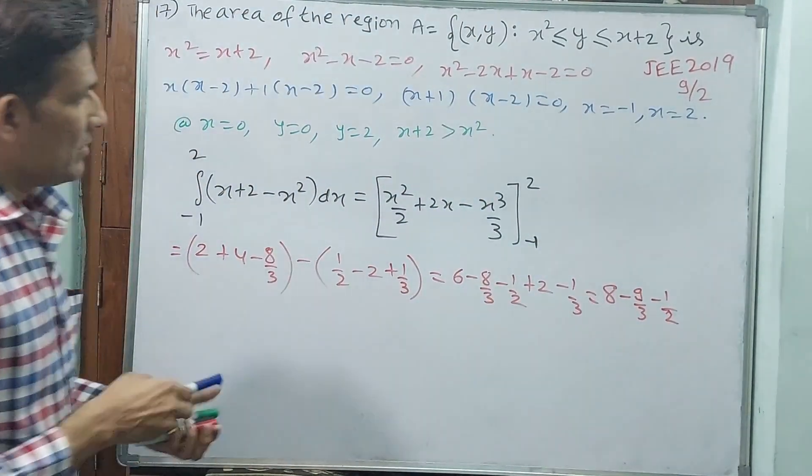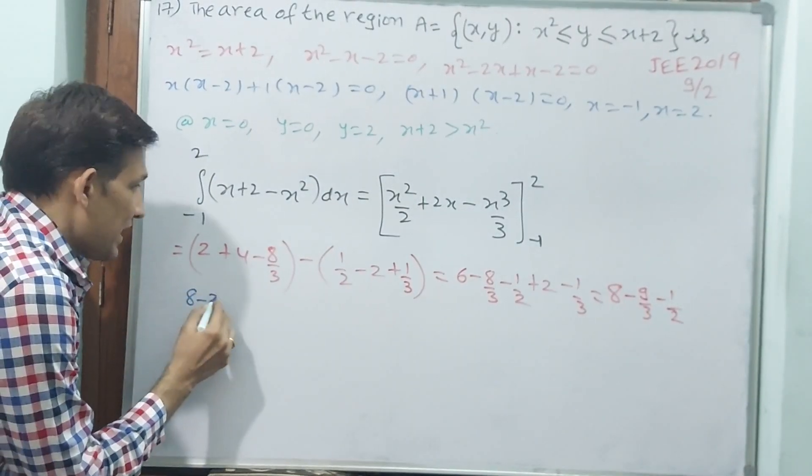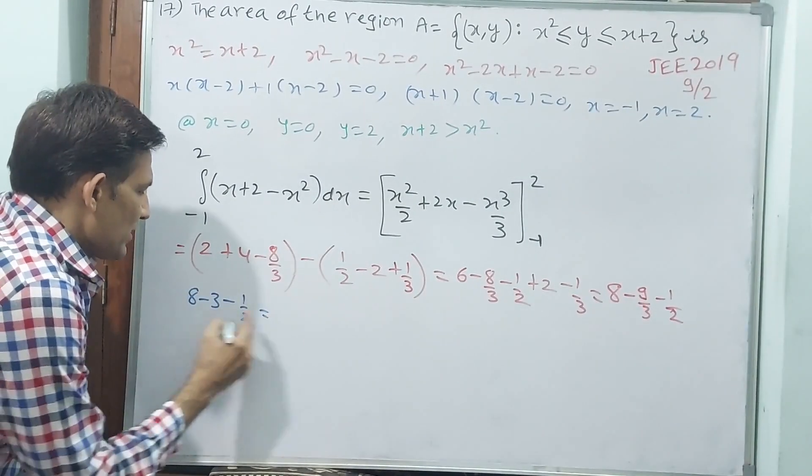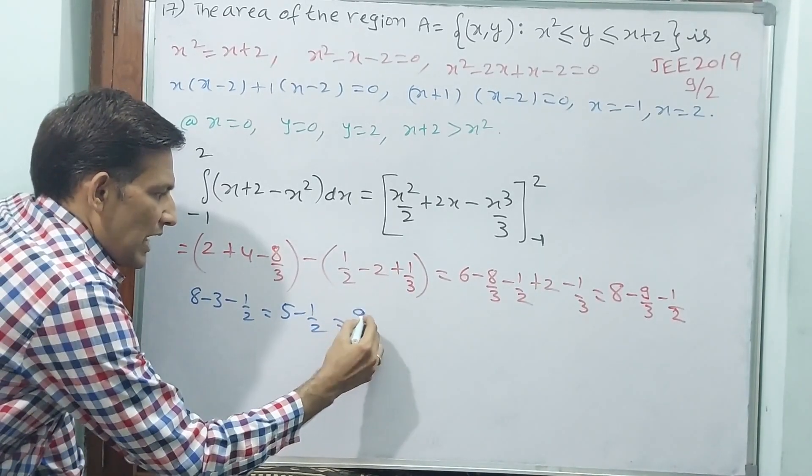See, minus 9 by 3 means minus 3. 8 minus 3 minus 1 by 2. 8 minus 3 is 5. 5 minus 1 by 2. 10 minus 1, 9 by 2.